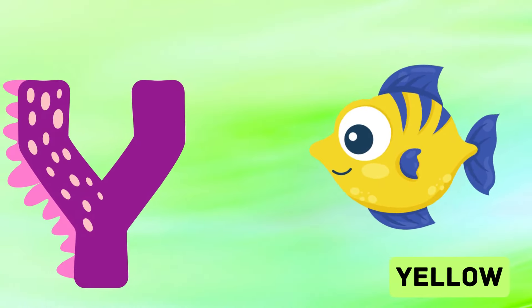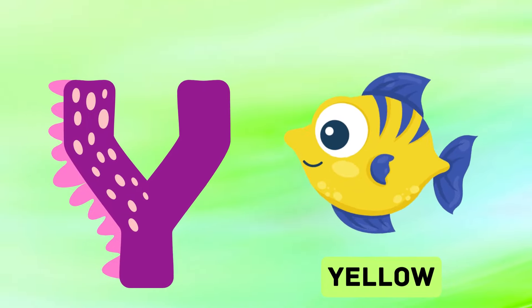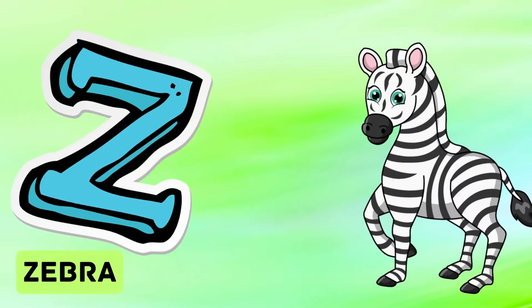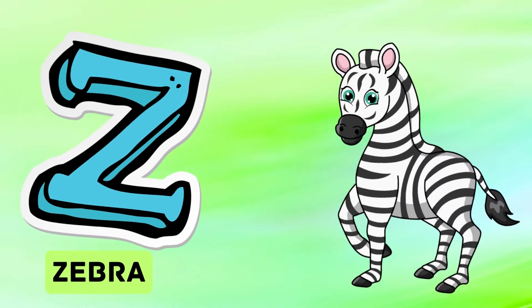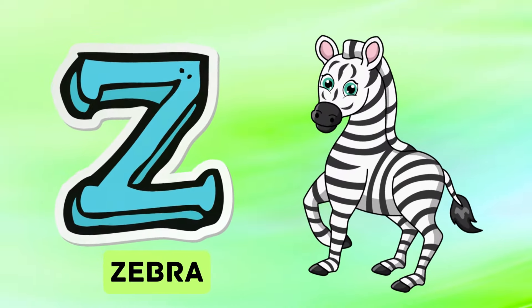Y is for yellow, ye-ye-yellow. Z is for zebra, z-z-zebra.